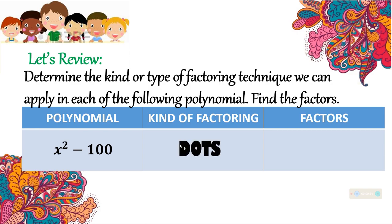That is under DOTS. And if you are going to find the factors, the factors of x squared minus 100 are x minus 10 times x plus 10.